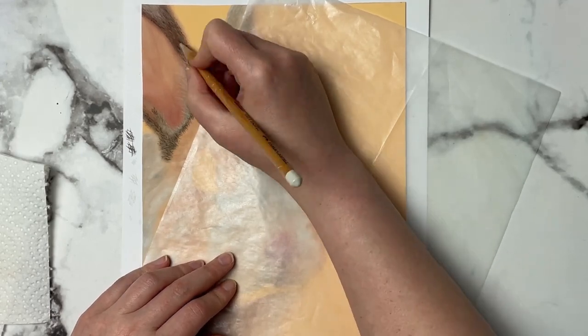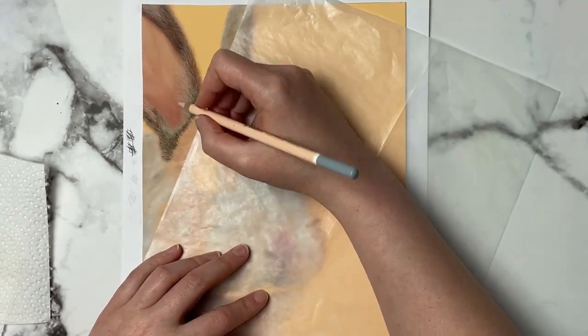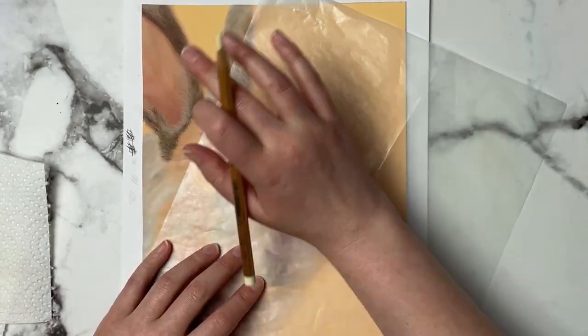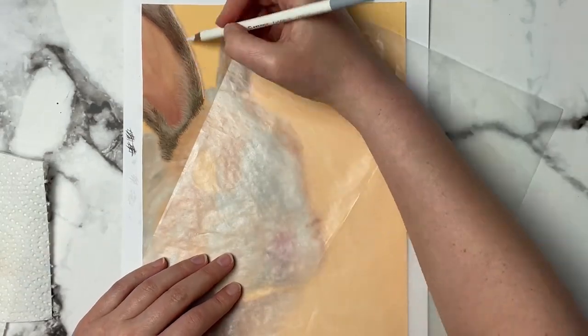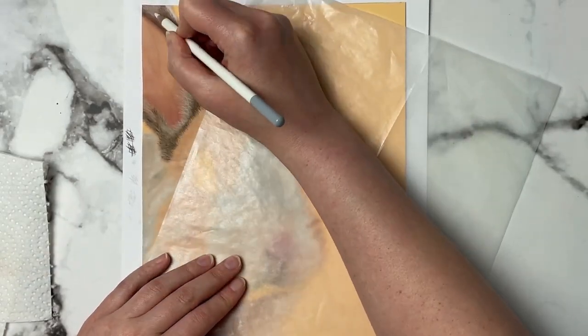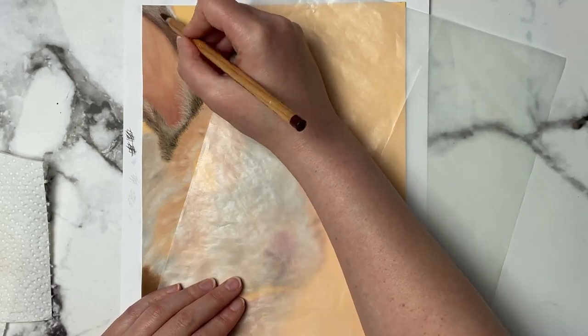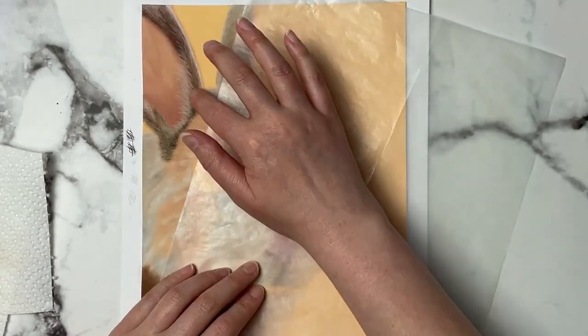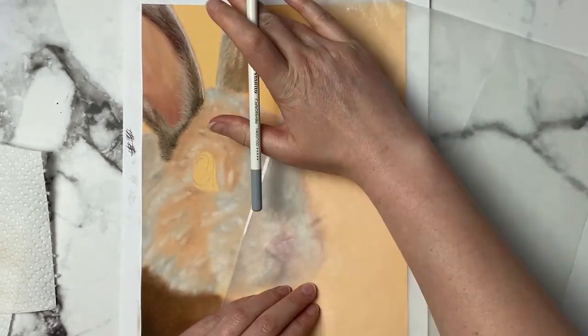Now I tend to work sort of one area at a time through my piece, but I'll go back and fix up areas as I see fit. And then once I'm done I always like to look at the piece as a whole and decide if there's any areas that need to go a little bit darker or a little bit lighter overall.